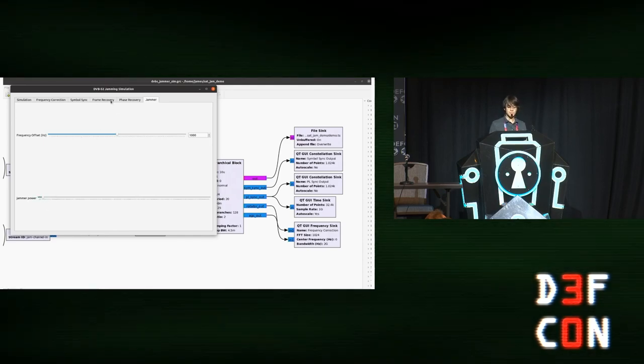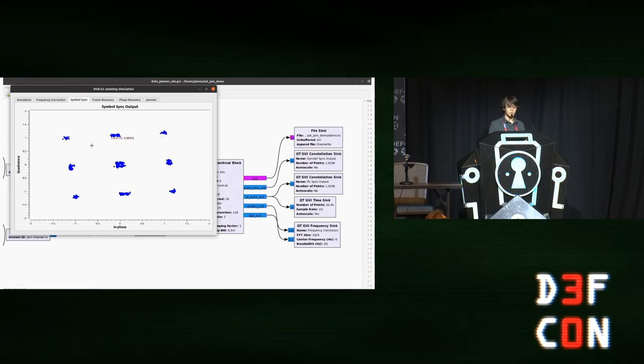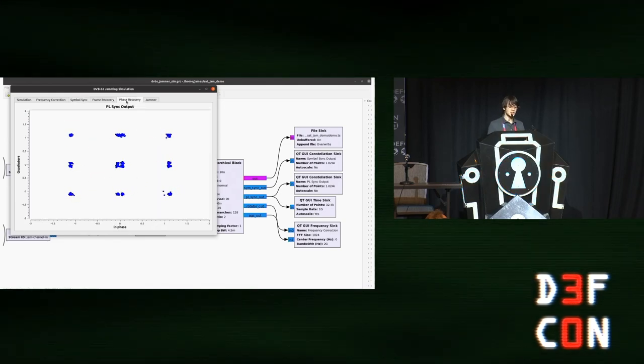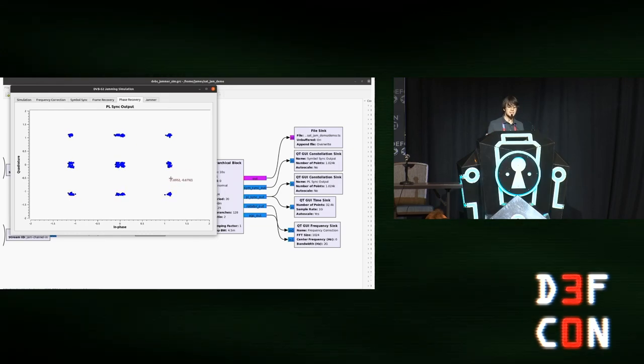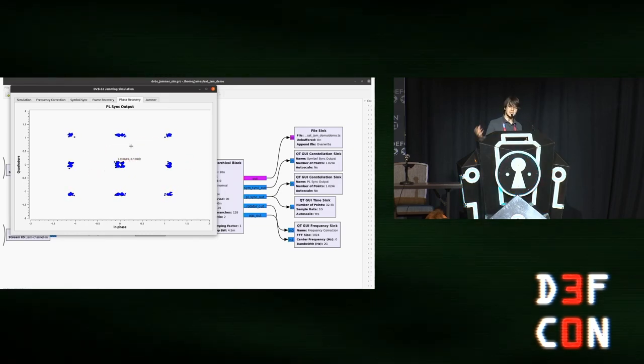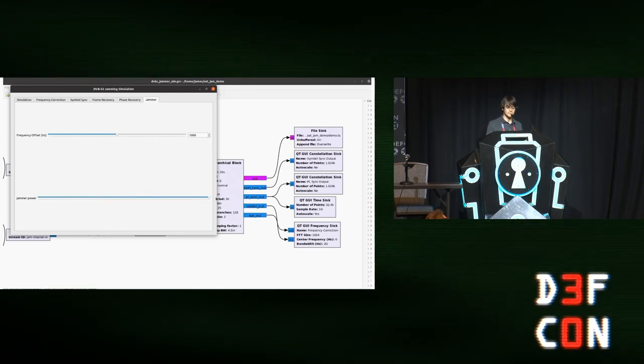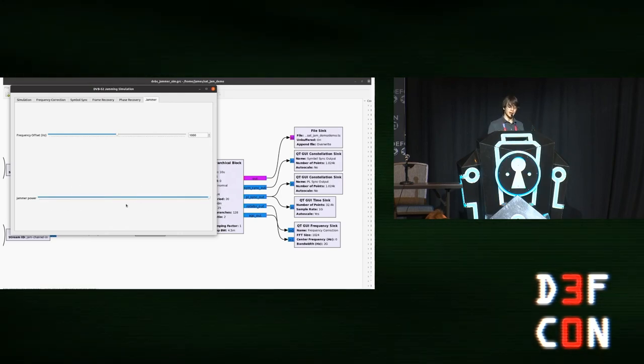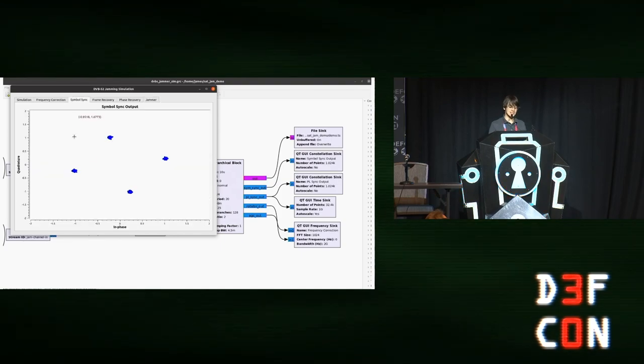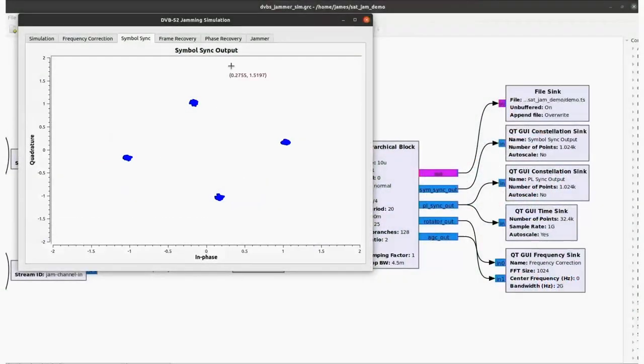If we turn on the jammer just a little bit, make it roughly equal to the legitimate signal, we'll see that constellation has degraded. We no longer have those four symbols. We can't tell what's a one, what's a zero. And the information we're transmitting has been broken at a physical level. If we ramp the jammer all the way up, and then we look again at the constellation diagram, we'll see those four nice, neat dots again. But the idea here is that it's probably transmitting the wrong content. It's transmitting the attacker's content.